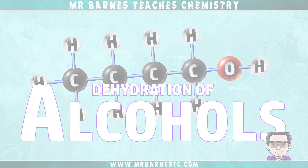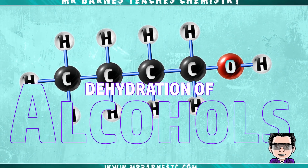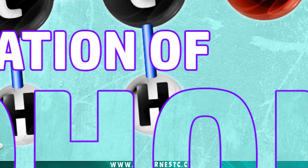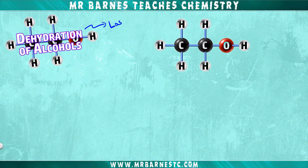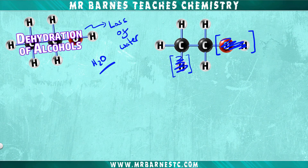Welcome to this video looking at the dehydration of alcohols. Dehydration in chemistry is the removal of water, H₂O. Looking at the example of ethanol, C₂H₅OH, when we talk about the dehydration of ethanol we want to take the hydroxyl OH group away and one hydrogen. This forms water and leaves you with an alkene — in this case ethene, with a double bond.